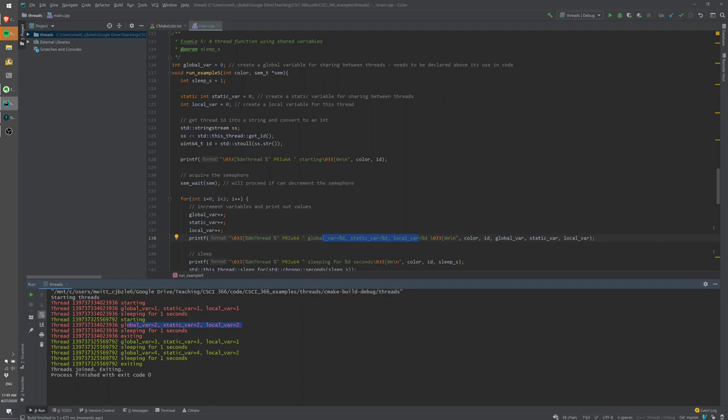Now, when it comes to the other thread, the other thread that enters the loop and keeps incrementing the global variable because it is global. So, the changes that the first thread made to it are reflected in the second thread which then increases the value to three and then four. The same thing happens for the static variable where it keeps getting incremented. However, the local variable is just in the scope of this function and so it gets initialized again and so the second thread increments it again to one and again to two.